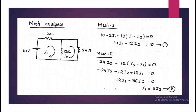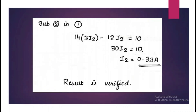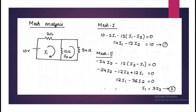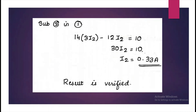Now we have to verify the result using mesh analysis. On the same circuit, we can do mesh analysis. There are two meshes. Write the equations and solve for the current I2 which flows through the 24 ohm resistor. That will give the same result of 0.33 ampere, and therefore the result can be verified.